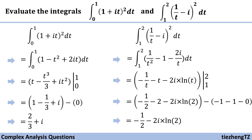So let's recap: when we see this type of question, we need to simplify the equation first, then find the antiderivative for each part, and then substitute and do the math.